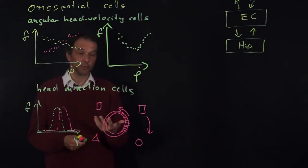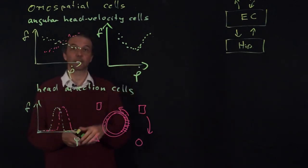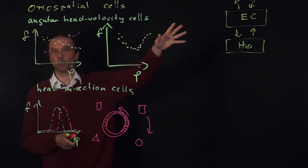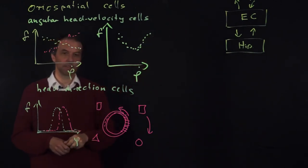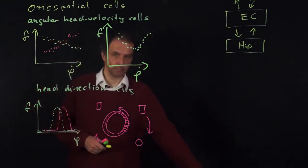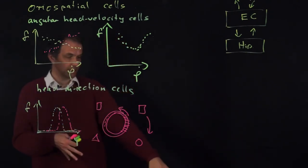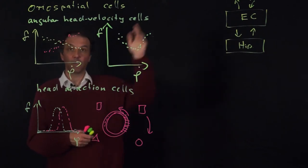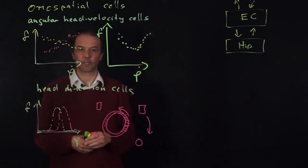The distal cues are more important than the proximal cues — far away cues are more reliable in telling us the direction. If you have a mountain somewhere far away, that's more reliable than a little box on the side, because if you move, the direction of the box might vary, but the mountain stays pretty much the same unless you move large distances.